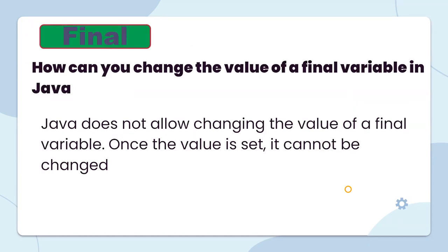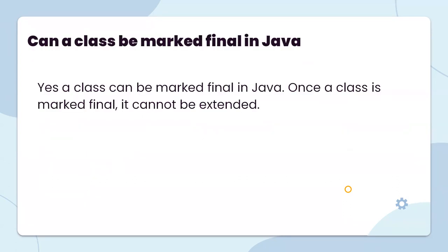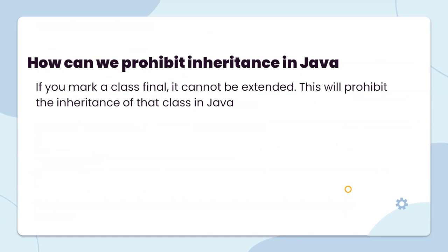Now the next topic is 'final'. How can you change the value of a final variable in Java? Java does not allow changing the value of a final variable — once the value is set, it cannot be changed. Can a class be marked final in Java? Yes, a class can be marked final. Once a class is marked as final, it cannot be extended, which provides immutability for that class.